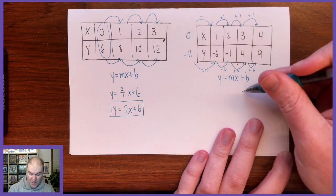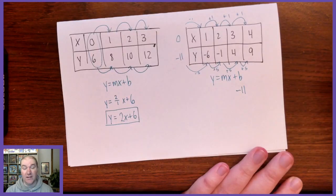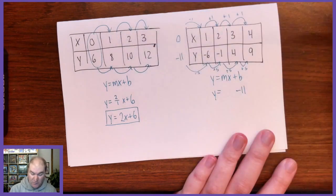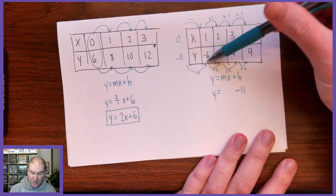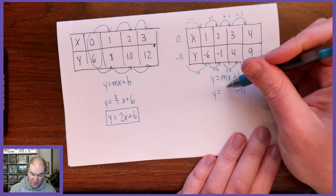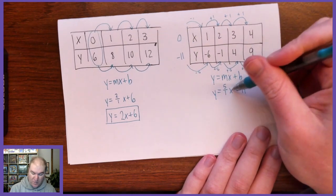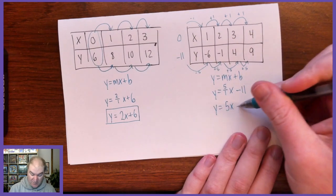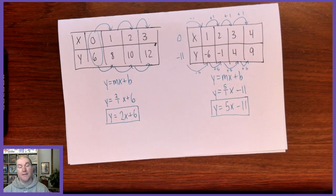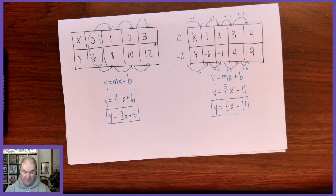That means the y-intercept is negative 11 here. And then the slope, we just do what we've been doing before. It's how much the y's are increasing divided by how much the x's are increasing. So the slope is going to be 5 over 1, which would just simplify to 5x. The equation of this table is y equals 5x minus 11.